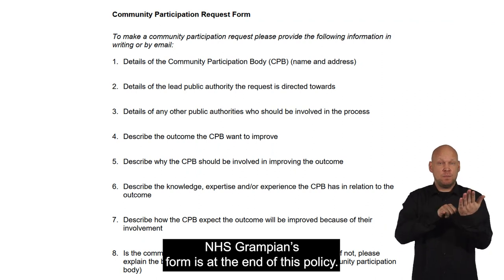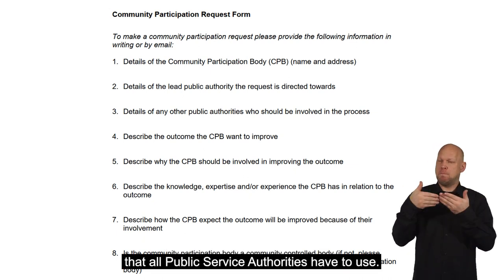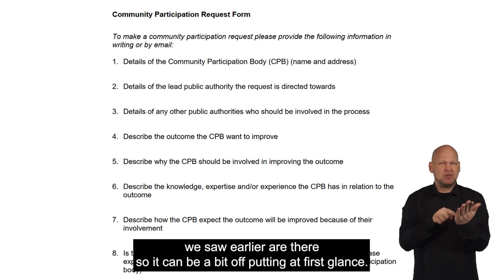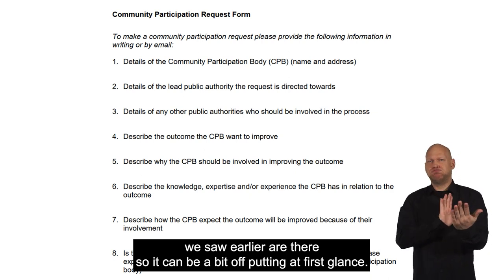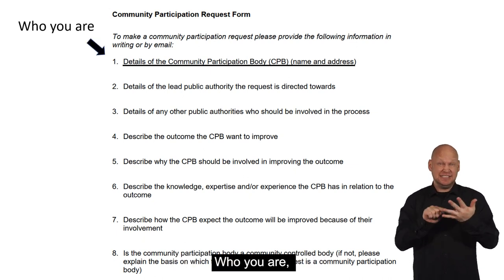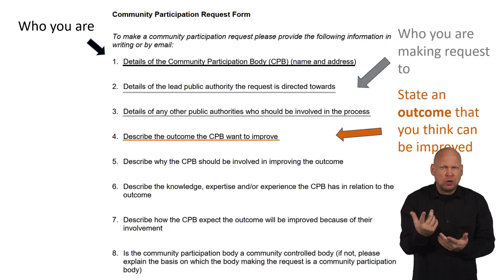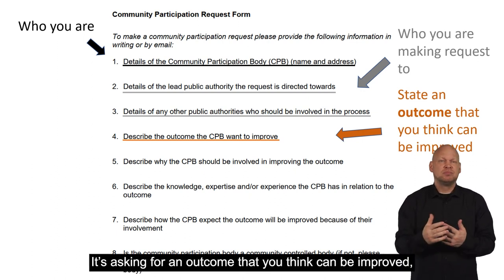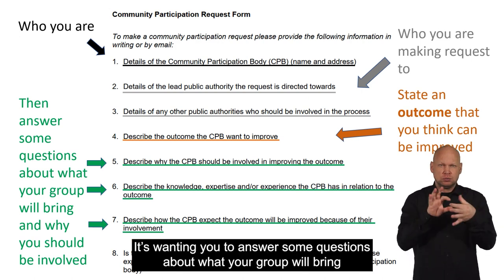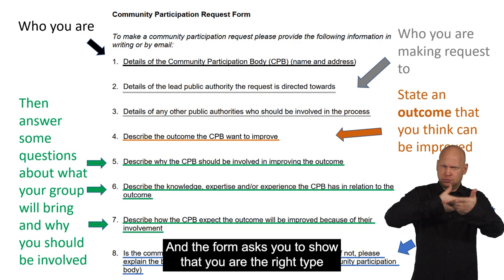NHS Grampian's form is at the end of this policy. It contains eight questions based on a standard template that all Public Service Authorities have to use. As with most of the forms, a lot of the technical terms we saw earlier are there, so it can be a bit off-putting at first glance. However, if you break it down, the form is asking five things: who you are; who you are making the request to; an outcome that you think can be improved; some questions about what your group will bring and why you should be involved; and to show that you are the right type of group.